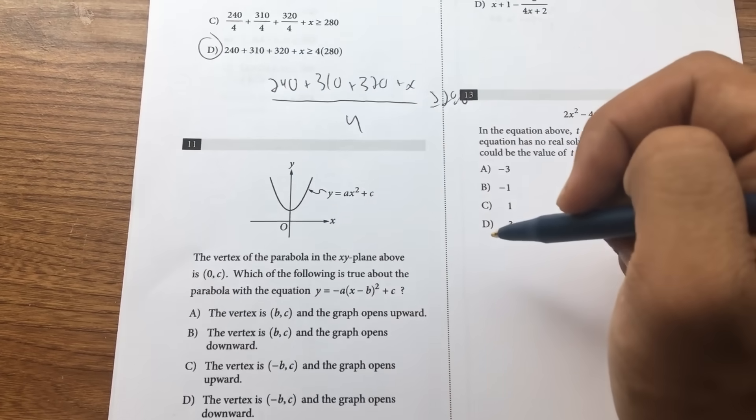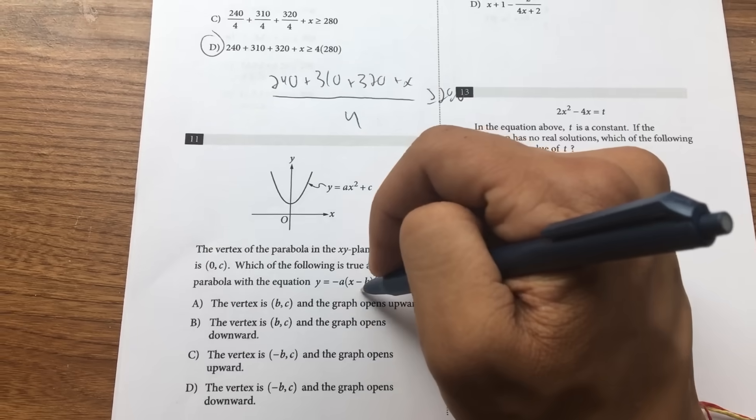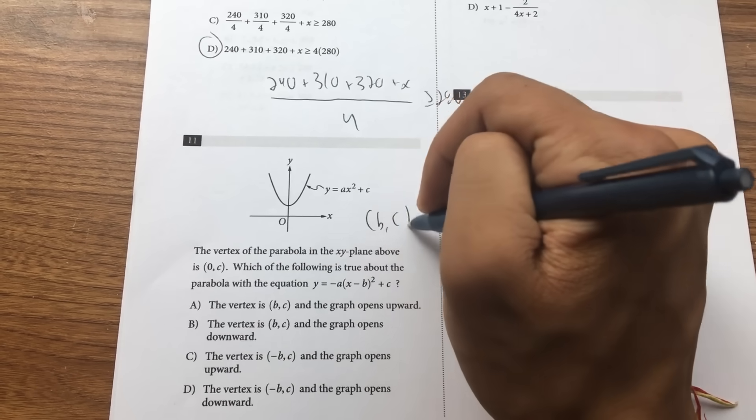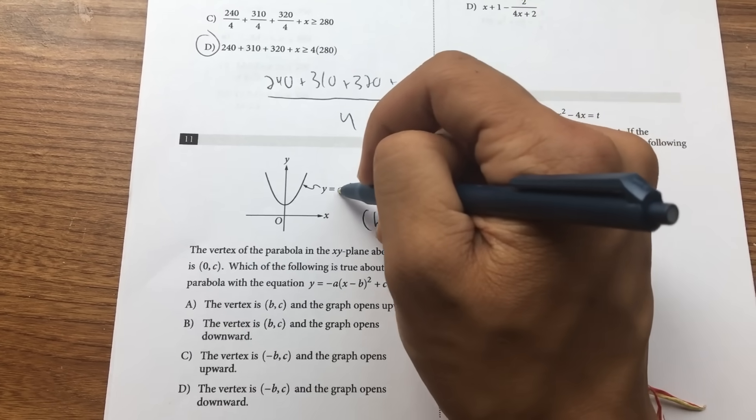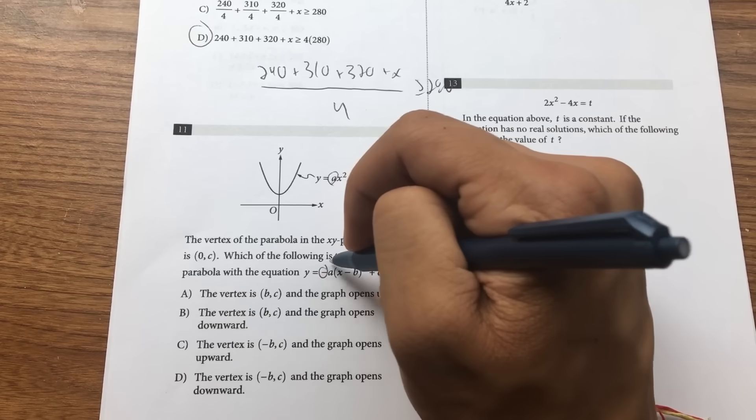Let's look at number 11. This is just classic form, knowing your vertex formula. Vertex is BC. A negative coefficient means opening down, positive means opening up. So vertex is BC and graph opens downward.